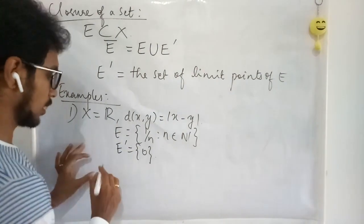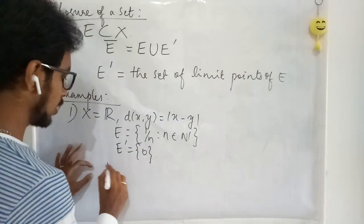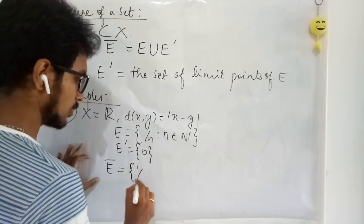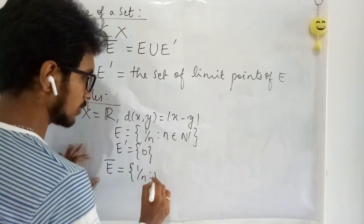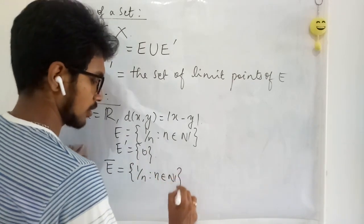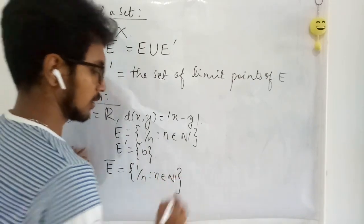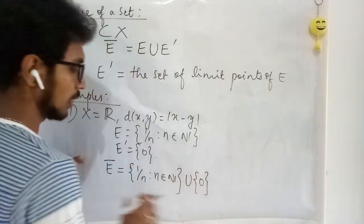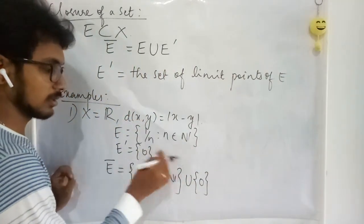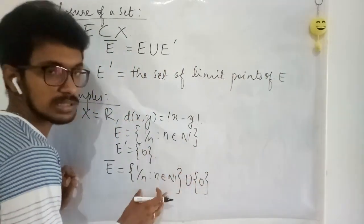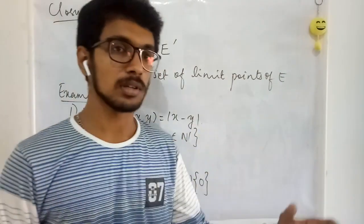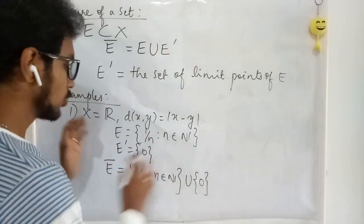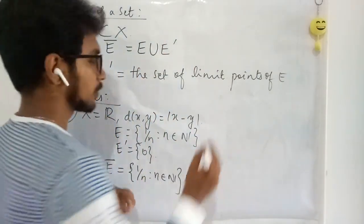We know E is the set {1/n}. So E-closure is going to be E, that is {1/n : n ∈ ℕ}, union with the set {0}. This 0 is never obtained in E — the sequence is approaching 0 but never reaches it. So this union is going to be the closure.